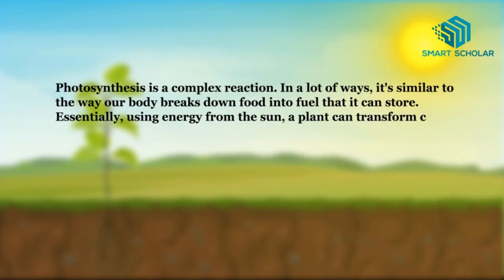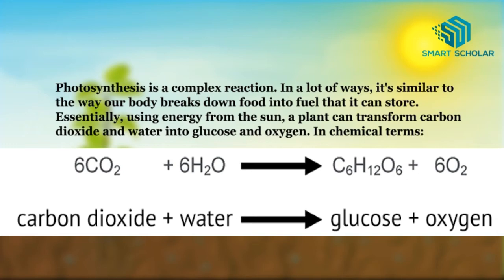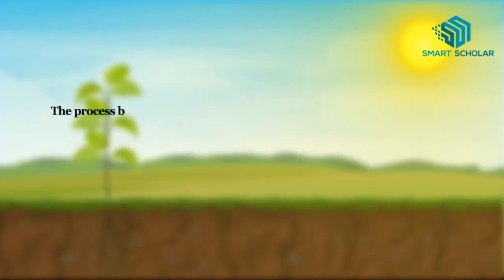Essentially, using energy from the sun, a plant can transform carbon dioxide and water into glucose and oxygen. In chemical terms, carbon dioxide and water in the presence of sunlight gives carbohydrates and oxygen. The process by which plants make food is called Photosynthesis.